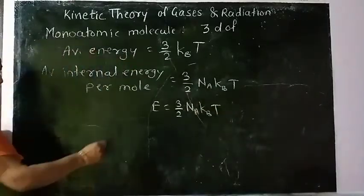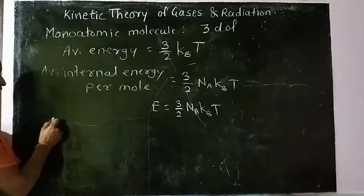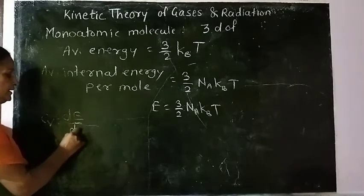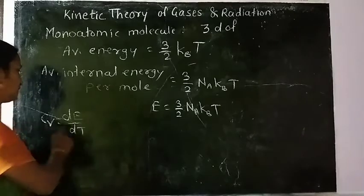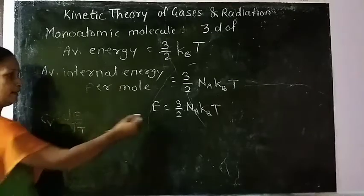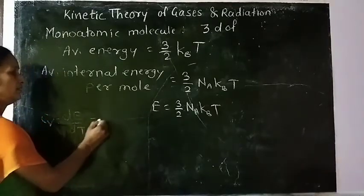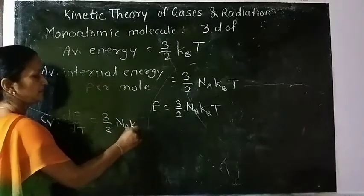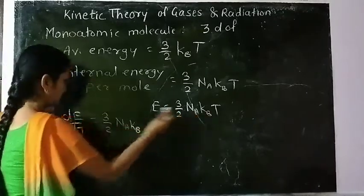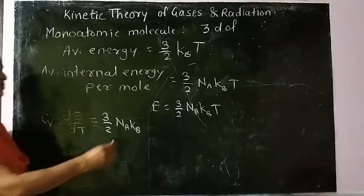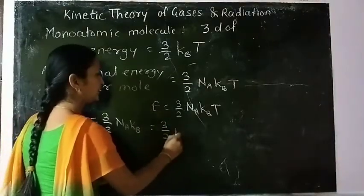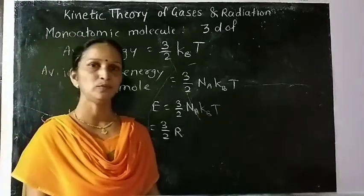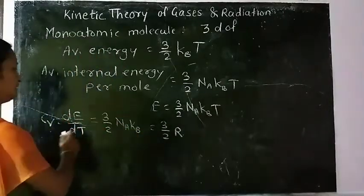The specific heat at constant volume, C_V, is dE/dT. Differentiating with respect to T gives C_V = 3/2 N_A k_B, which is nothing but 3/2 R, since N_A k_B = R. So C_V = 3/2 R.